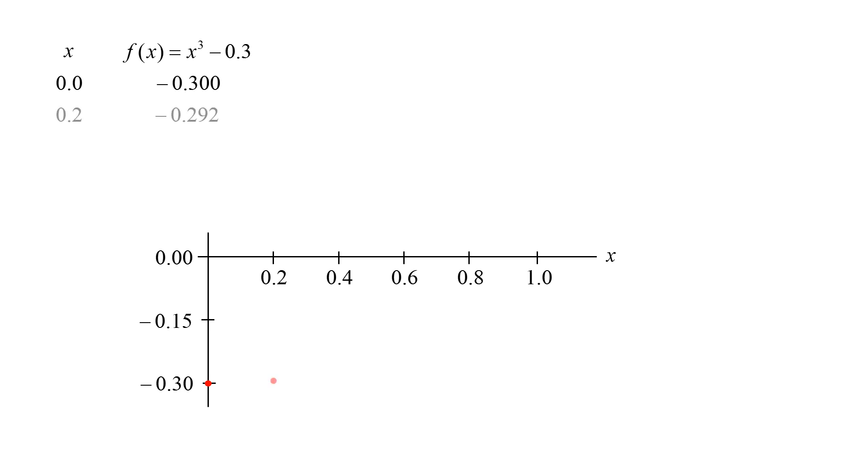The next value of x is 0.2, and the function is approximately -0.292. Since the sign of the function is still negative, we have not yet reached the root. At x = 0.4, the function is approximately -0.236, and we continue marching forward. At x = 0.6, the function is approximately -0.084. At x = 0.8, the function is approximately +0.212.